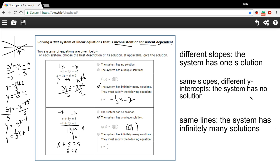So keep these three rules in mind as you're doing these problems. If the lines have different slopes, the system has a solution. If they have the same slopes but different y-intercepts, the system has no solution. It's inconsistent. And if they're the same lines exactly, so they have the same slope, the same y-intercept, then the system has infinitely many solutions. And we call that dependent.